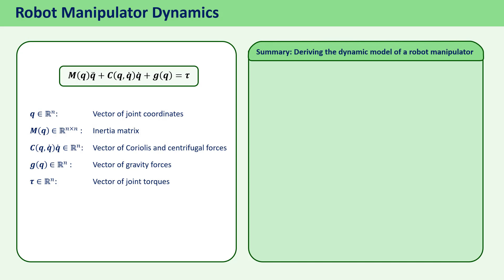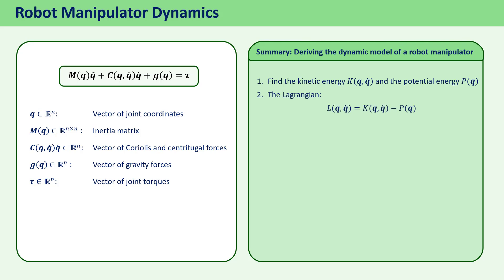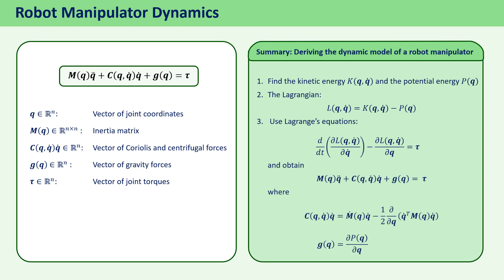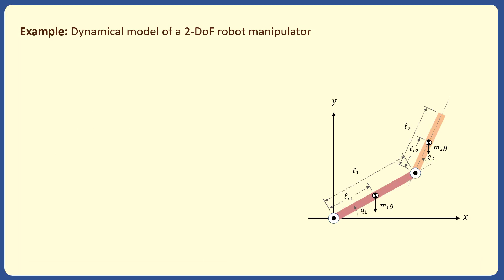In summary, to find the dynamic model of a robot manipulator, we first find the kinetic energy k of q and q-dot and the potential energy p of q, then define the Lagrangian as L equals k minus p, and then use Lagrangian equations to find the dynamical model. To better understand the dynamical modeling, we show step by step how to obtain the dynamical model of a 2-degree-of-freedom robot manipulator with revolute joints, giving a high-level overview of the process.